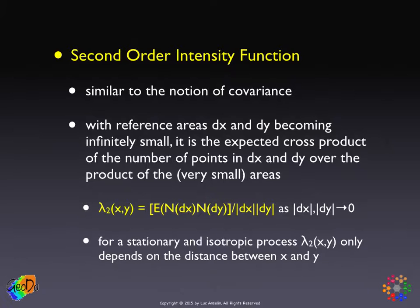Just like the first-order intensity function is the ratio of the number of points over area, the second-order intensity function is the ratio of the expected value — on average — of the product of the number of points in two areas divided by the product of those areas, as those areas go to the limit to be very small. Because it is in space, the covariance depends on the location, and maybe also the direction and the distance between the two small areas. For a stationary and isotropic process, this second-order intensity function lambda-2 of x and y only depends on the distance between x and y.